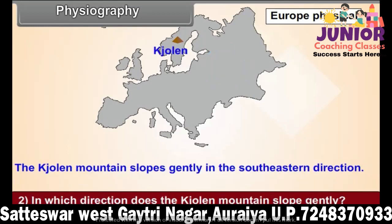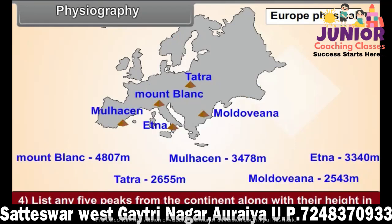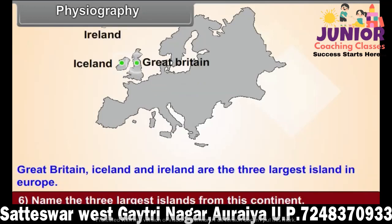Question 5: In which part of the continent is the Black Forest block mountain located? Question 6: Name the 3 largest islands from this continent. Question 7: Where is the distance between the continents of Europe and Africa the least? Question 8: What name is given to the Danube river plain surrounded by mountains?